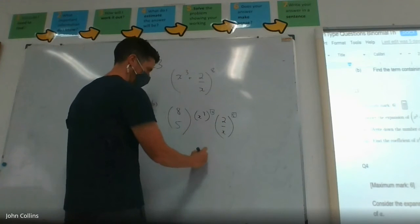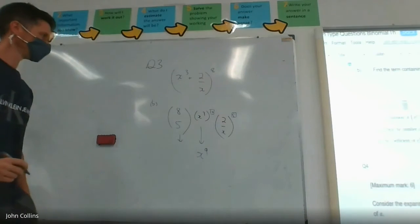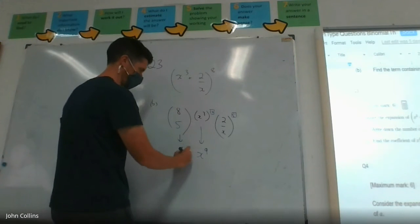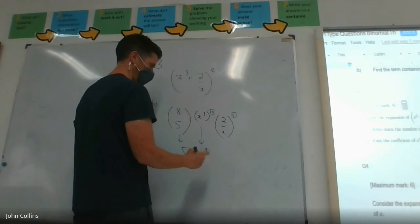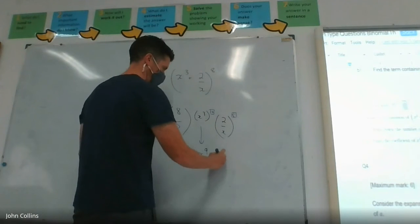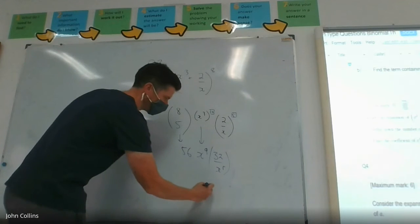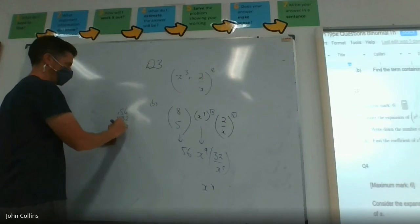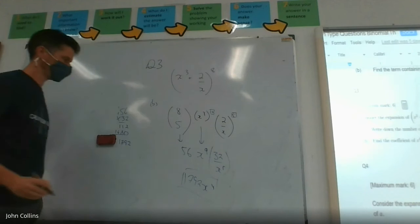All right, so we already know that's x^4. This one is 8 choose 5. I can't remember what it is. Anyone know what it is? 8 choose 5? 56. And two to the power of five I do know is 32, 32 over x to the five. So the five and the nine do make x to the four, we know that. But now I need to multiply 32 times 56. Of course, you've been doing it that way better. 1792. 1792x^4. Excellent.